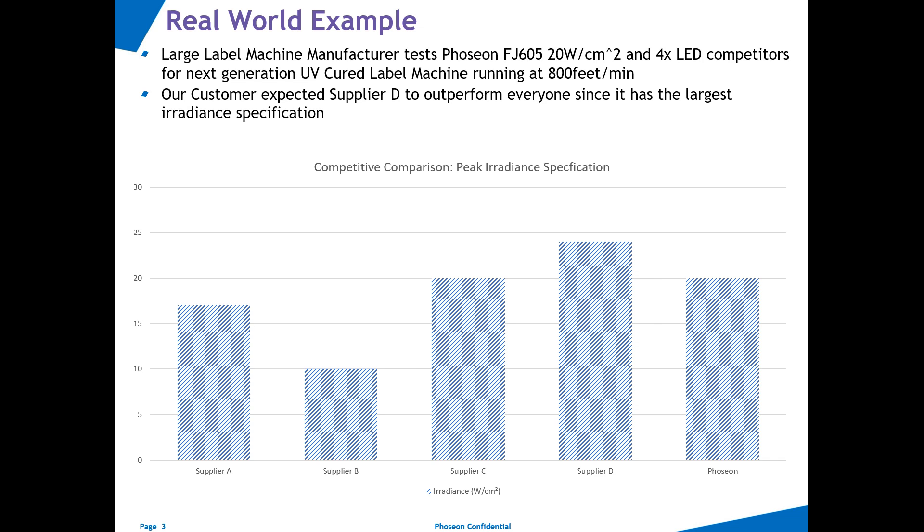As is always the case in the competitive UV LED market, our customer was also simultaneously testing other UV LED curing lamp manufacturers. As you can see in the bar graph shown below, many of these competitors did have similar peak irradiance specifications when compared to Phoseon. One well-known competitor had an even higher peak irradiance, supplier D below, when you compare it to the FJ605 20 watt per square centimeter shown on the right. Naturally our customer assumed that the lamp of supplier D would perform best when approaching the very limits of their printing speed.